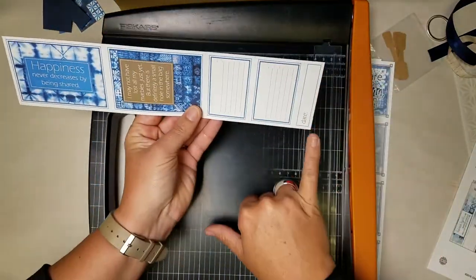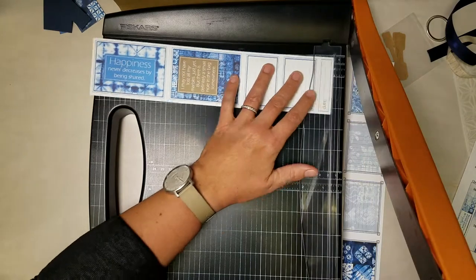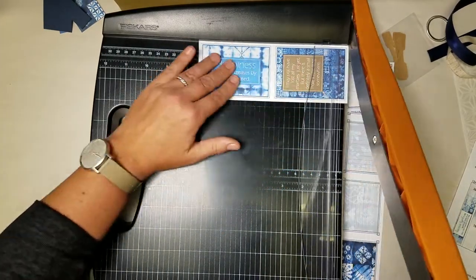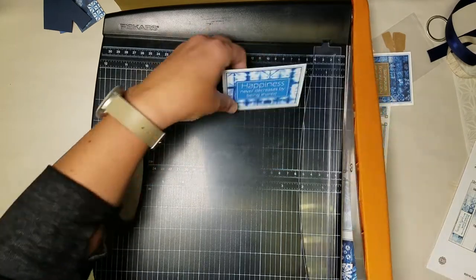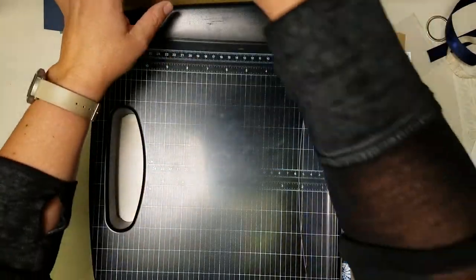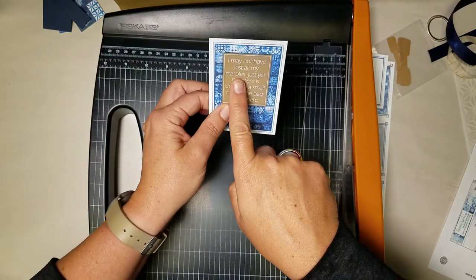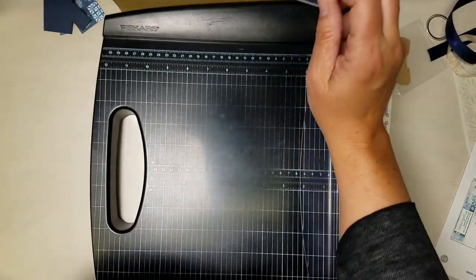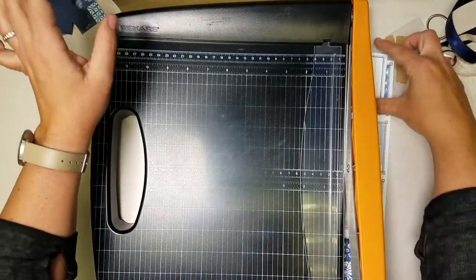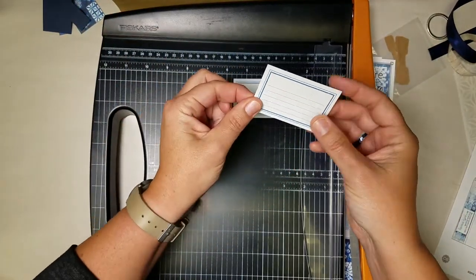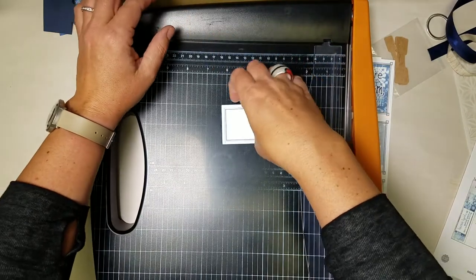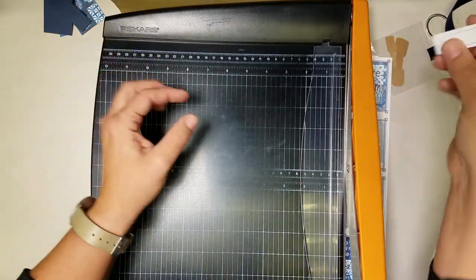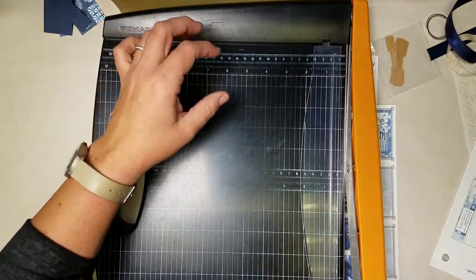Let's grab our next strip, place it in the trimmer horizontally so the word date is on the right. Happiness goes in five and six. I may not have lost all my marbles just yet but there is definitely a small hole in the bag somewhere. That goes in seven and eight. We have a journaling prompt. One of them goes in three and four and the other one and two. And then there should be that tiny little piece with the word date that also goes in one and two.